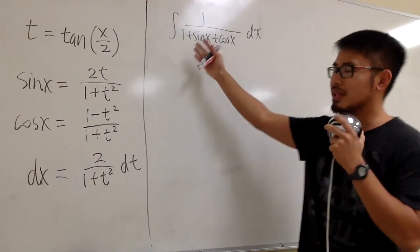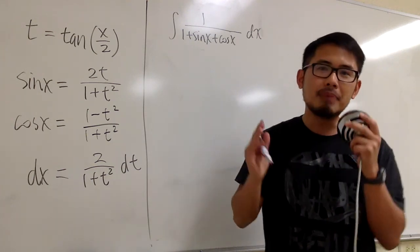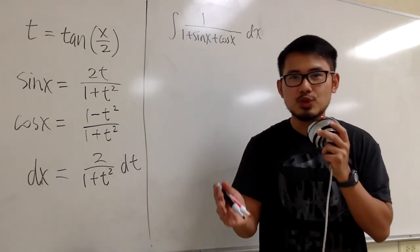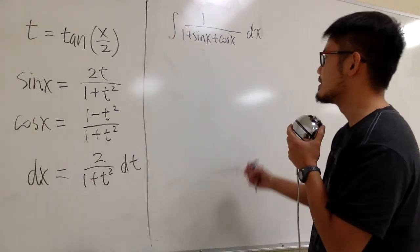Let's integrate 1 over 1 plus sin x plus cos x. Even though there's another way to do it, I want to show you guys the Weierstrass substitution. We have all these ingredients right here ready for us already.